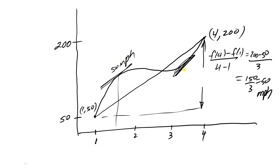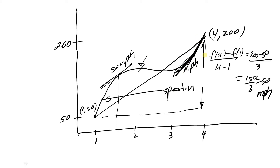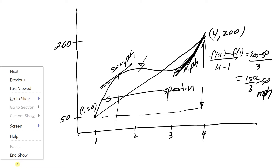Notice you're speeding at one point, you really slowed down and even went backwards at another, and then towards the end you sped up quite a bit. So that illustrates both Rolle's Theorem and the Mean Value Theorem.